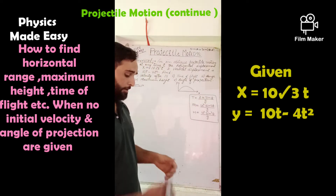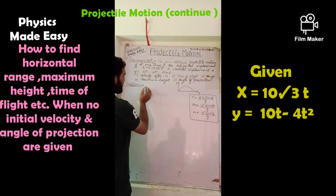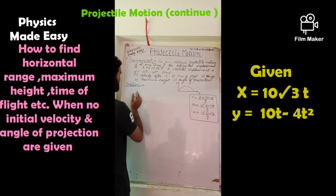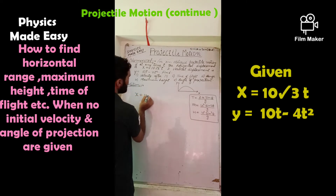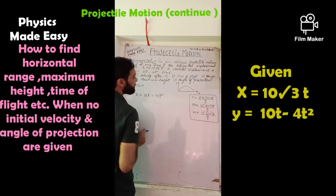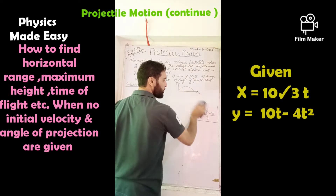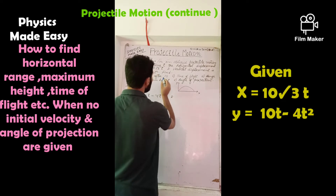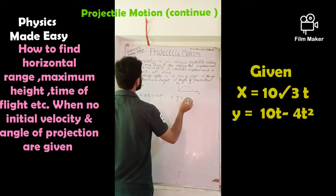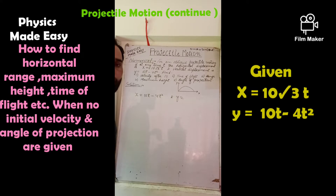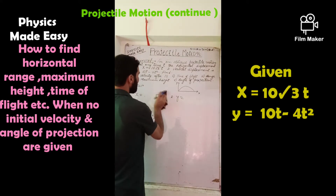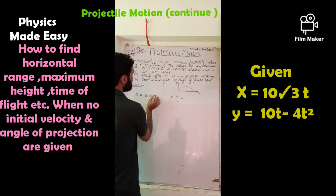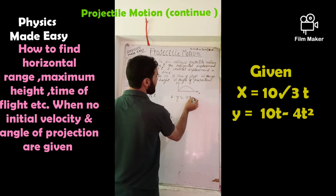Let's solve the problem with another approach. Writing what's given: the horizontal displacement is x = 10√3·t and the vertical displacement is y = 10t - 4t².